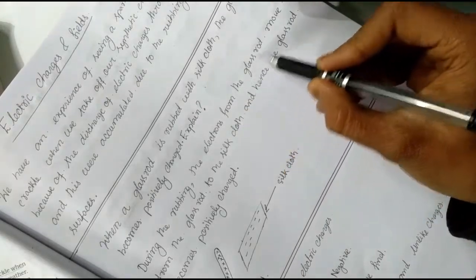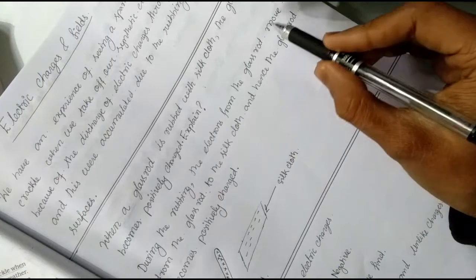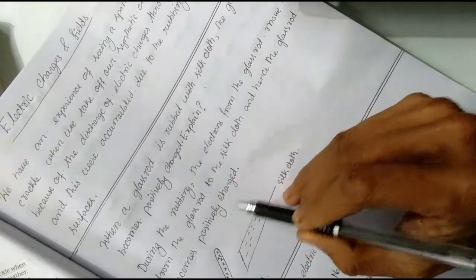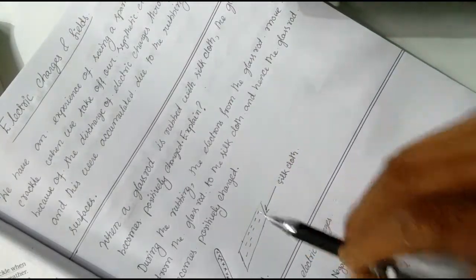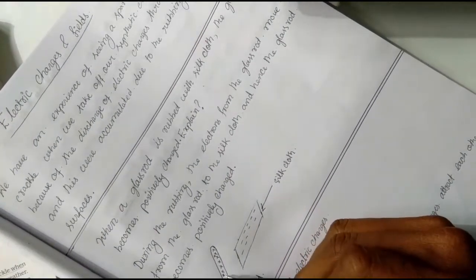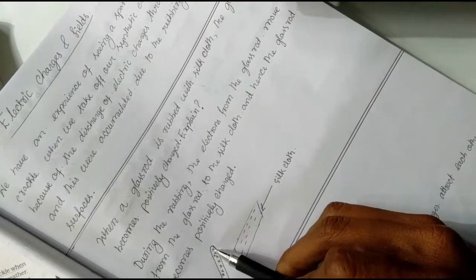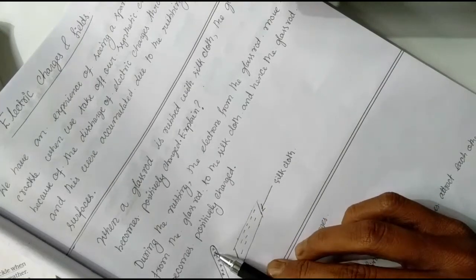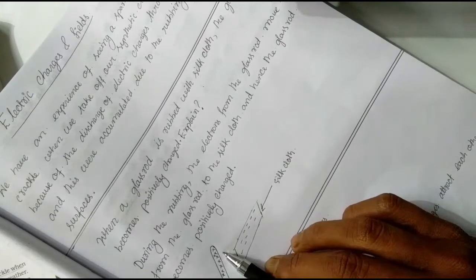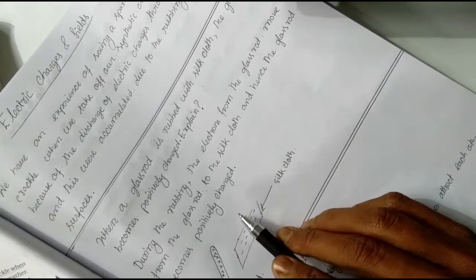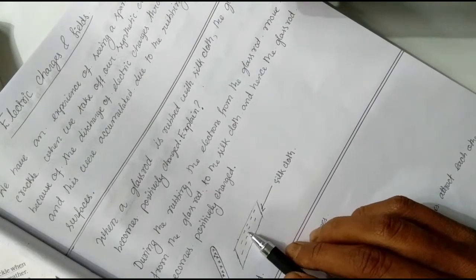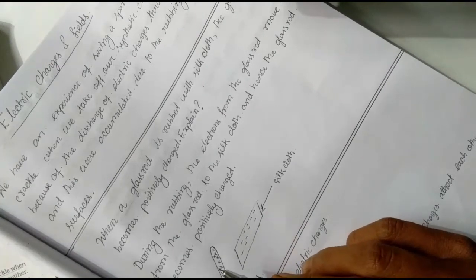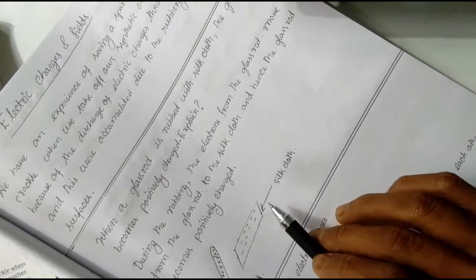The electrons which were present in the glass rod are transferred to the silk cloth. Since electrons are negatively charged, if electrons are negatively charged, then the silk cloth will have excess electrons and the glass rod will have fewer electrons. Therefore, the glass rod becomes positively charged and the silk cloth becomes negatively charged.